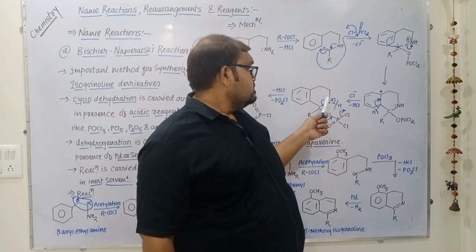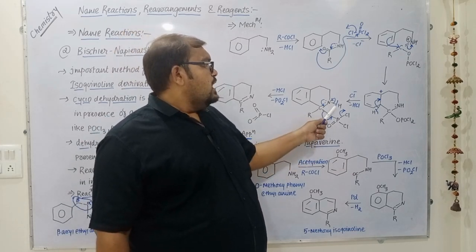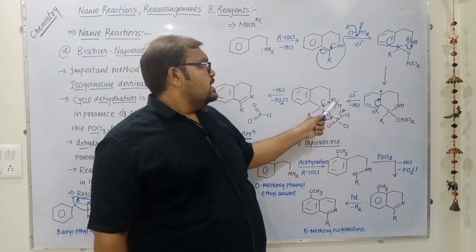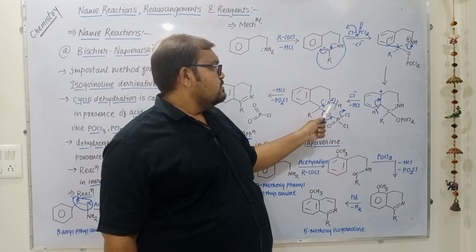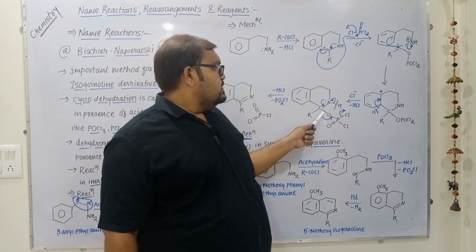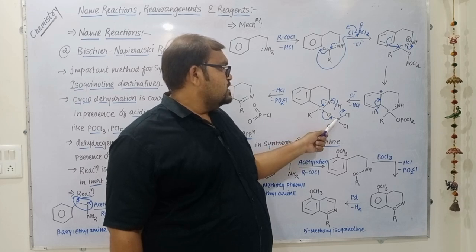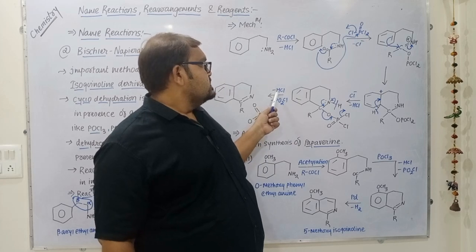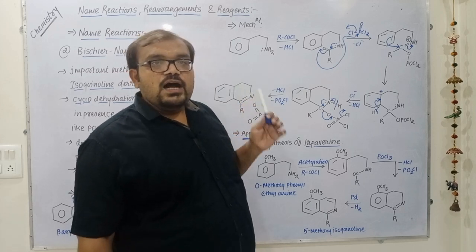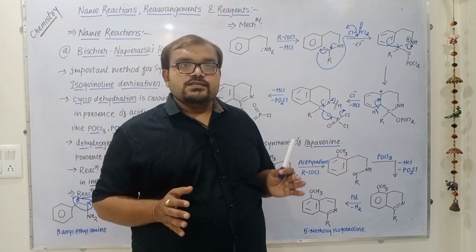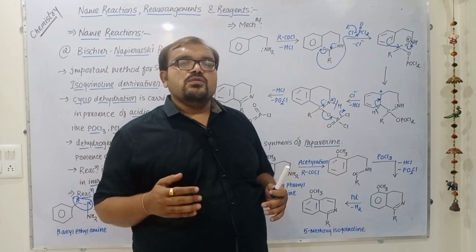We get an intermediate product. In the next step, the hydrogen on nitrogen is lost and the bonding pair shifts over nitrogen. The lone pair of nitrogen shifts between carbon and nitrogen forming a double bond. The C–O bond breaks, bonding electrons shift to phosphorus–oxygen, and Cl is lost. After loss of HCl and PO₂Cl, we obtain the 3,4-dihydroisoquinoline derivative.